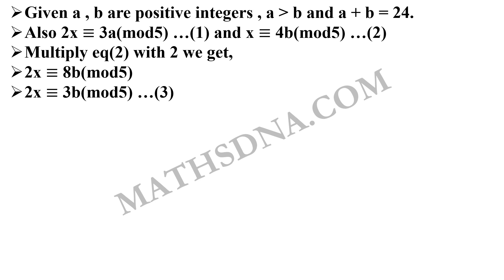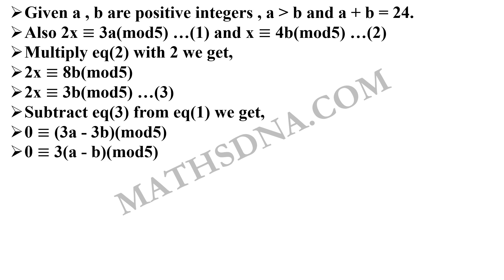Now, subtract equation 3 from equation 1, that gives you 0 is congruent to 3a minus 3b mod 5. Taking 3 as common, it gives us 0 is congruent to 3(a minus b) mod 5. Now, clearly, 3 is not 0. So definitely, a minus b has to be divisible by 5. Thus, a minus b is divisible by 5, and thus, option D is correct.